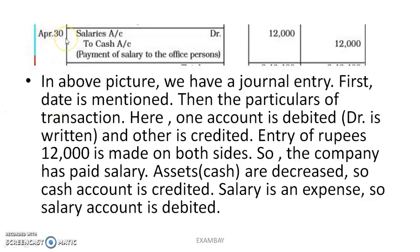In the journal, transactions are recorded date-wise — it is a chronological record. For example, a company pays salary to its employees. The salary account is debited with 12,000, and the cash account is credited with 12,000.